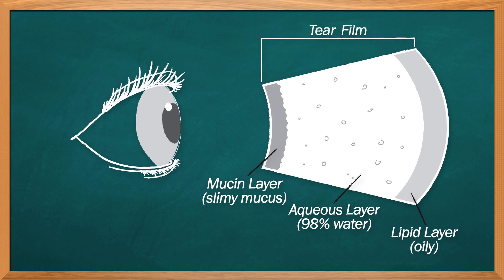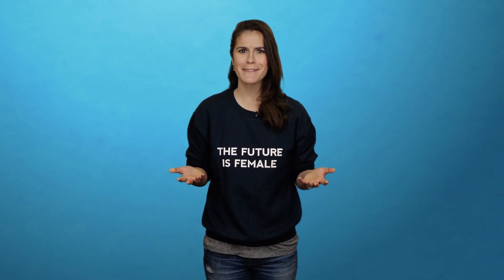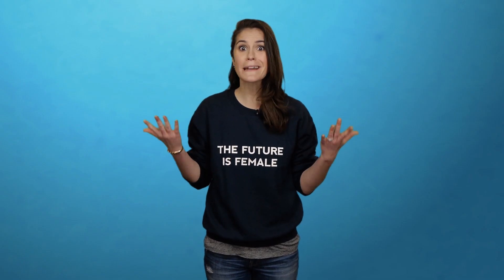Without the lipid layer, our tear film would drip right off our eyeballs. But how do these components become eye boogers? And why do they accumulate in the inner corners of your eyes? Well, I'll tell ya!